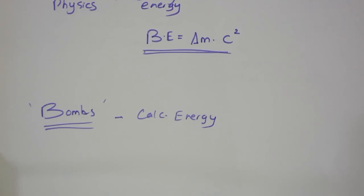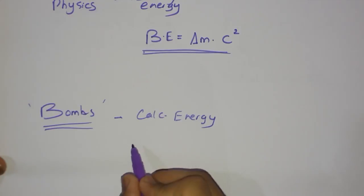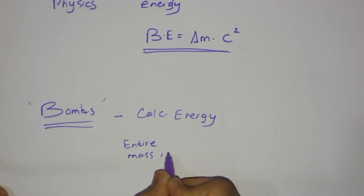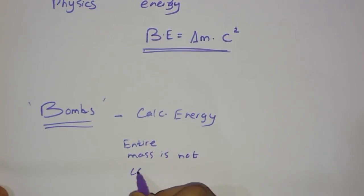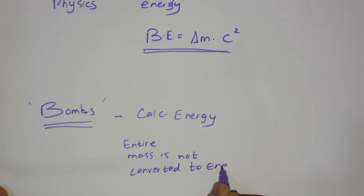So the mass of the matter, delta M, M, or E equals to M C squared. We can calculate the energy of that bomb, but let me tell you that entire mass is not converted to energy.